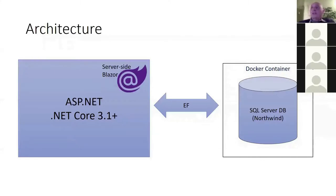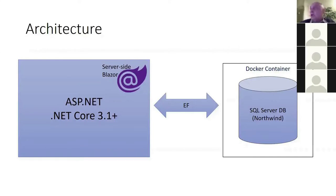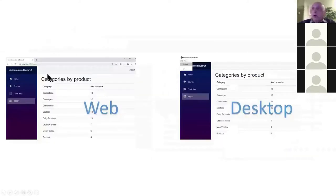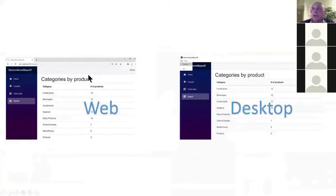This is the architecture of what we're going to do — it's very simple. I'm going to build a server-side Blazor app and get it to talk to a SQL Server Northwind database running in a Docker container, using Entity Framework 5.0. You may want a different use case — talking to an API, an ERP system, or whatever. I'm giving you a database example. We'll have two modes: run it as a desktop app by converting it to Electron, or run it as a web app without converting.